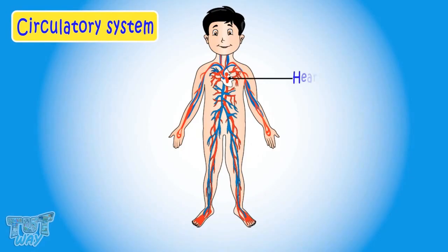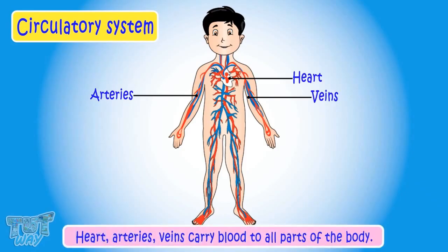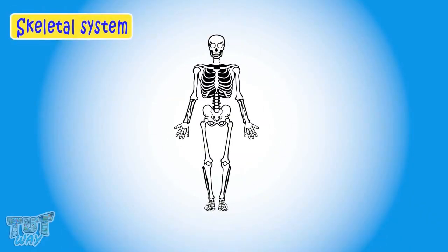Now let's learn about the circulatory system. The heart, arteries, veins, and blood make our circulatory system. It carries blood to all parts of the body.